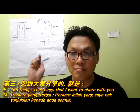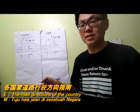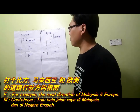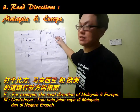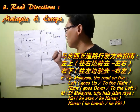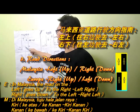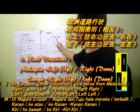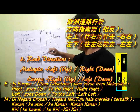The third thing I want to share with you is the things that we may need to follow. The first thing is the road direction. For example, I'll show you two countries — one is Malaysia and the other is Europe. Normally, the driving direction for Malaysia goes up to the left and down to the right. But for Europe or some countries, the road direction is different.